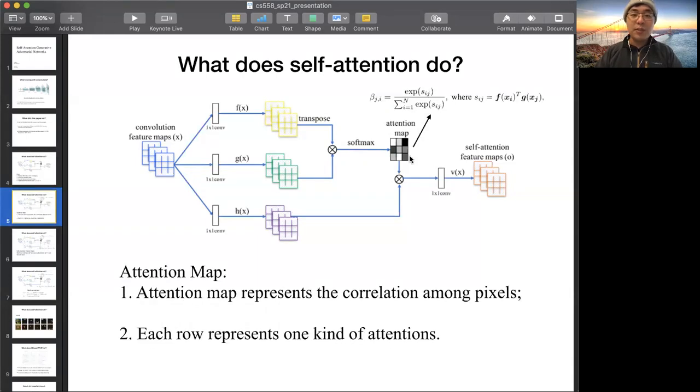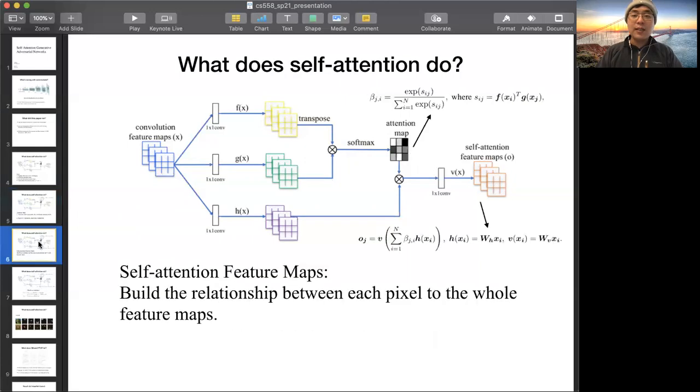For the attention maps, it represents the correlation among pixels. Multiplying two matrices means that we want to compute the distance among the pixels. Each row of the attention maps represents one kind of attention. If we have three rows, it means that we have three types of attentions.